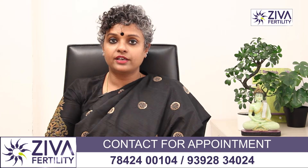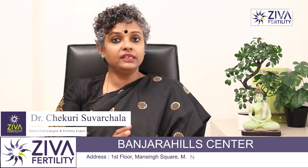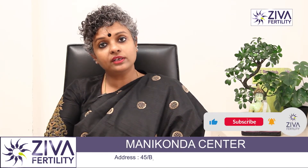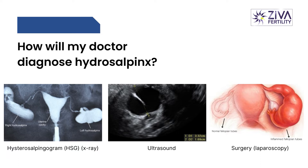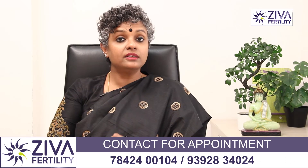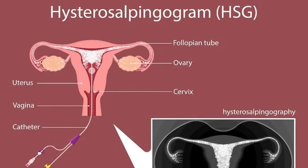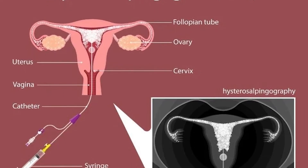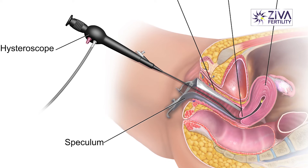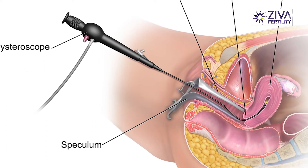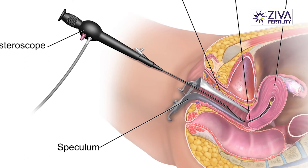How will your doctor diagnose a hydrosalpinx? Since there are not many symptoms, a regular test is done to find out what is causing infertility. The easiest test to assess the tubes is a hysterosalpingogram, where a special dye is passed into the uterus and flows out of the tubes on either side. If there is a partial or complete blockage, the dye does not come out. There is also hysteroscopy, where a scope is passed into the uterus and the tubes are assessed for any blockages.